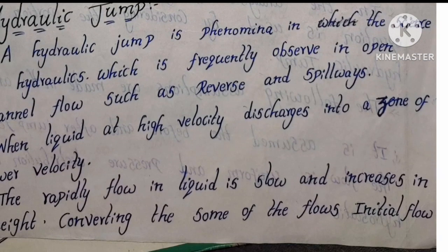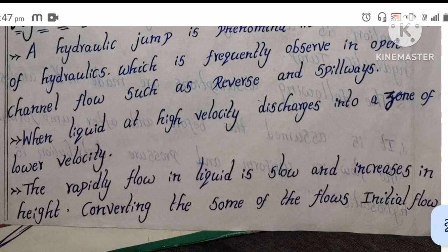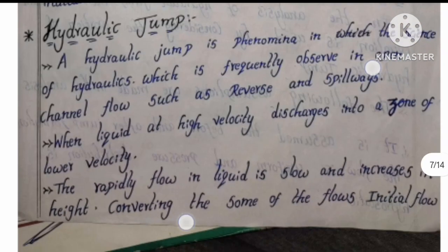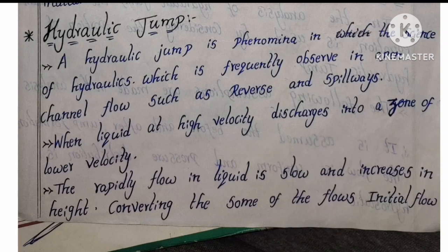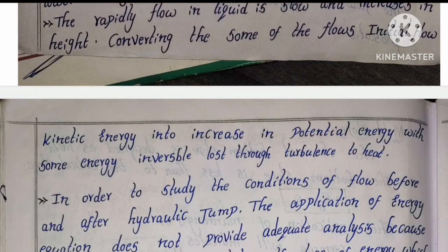When liquid of high velocity discharges into a zone of lower velocity, the rapidly flowing liquid slows and increases in height. The rapid flow converts to slow flow, height increases, and kinetic energy is converted to potential energy, with some energy lost as irreversible heat through turbulence.